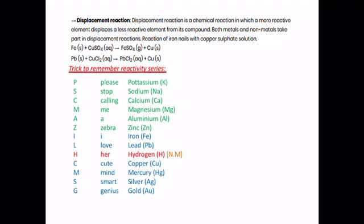A mnemonic to learn the reactivity series: 'Please Stop Calling Me A Zebra I Love Her Cute Mind Which Is Smart And Genius.' The first letter of each word stands for: Potassium, Sodium, Calcium, Magnesium, Aluminium, Zinc, Iron, Lead, Hydrogen (a non-metal), Copper, Mercury, Silver, and Gold. This series is in decreasing order of reactivity — Potassium is most reactive, Gold is least reactive.